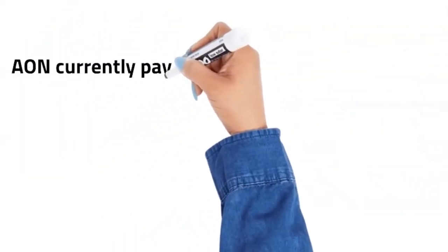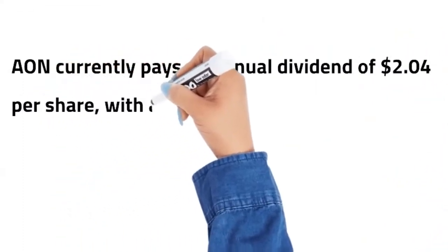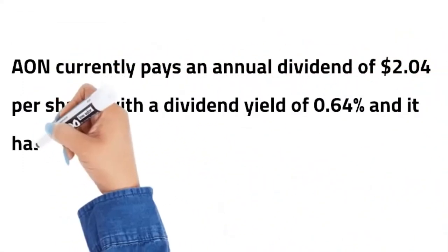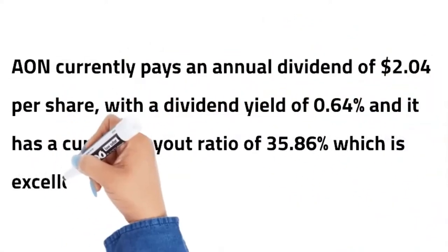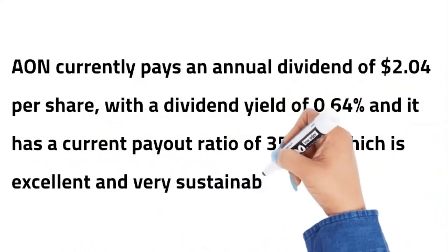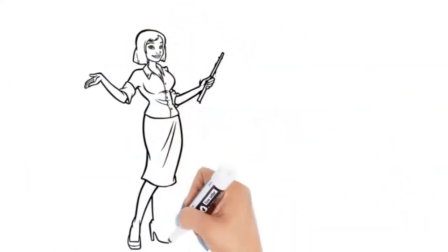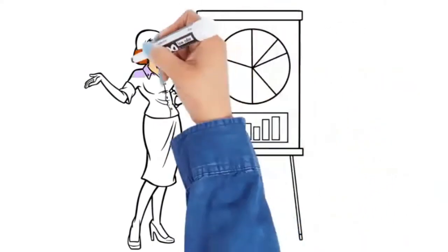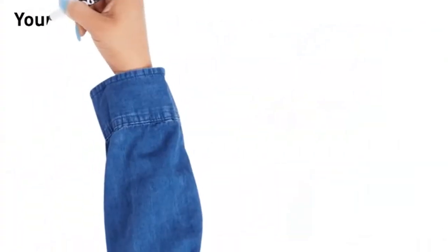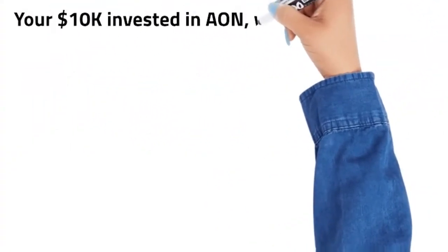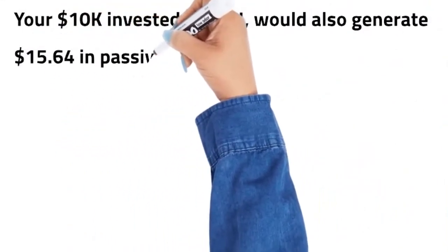Aon currently pays an annual dividend of $2.04 per share, with a dividend yield of 0.64% and it has a current payout ratio of 35.86%, which is excellent and very sustainable. Aon has a quarterly dividend distribution frequency, a 11-year track record of dividend increases and 3-year dividend growth is 8.45%. Your $10,000 invested in Aon would also generate $15.64 in passive quarterly cash flow.